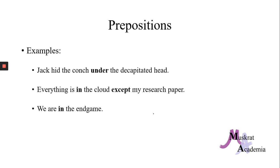Examples of prepositions: Jack hit the conch under the decapitated head. Under is a preposition. A lot of times, when you're working with prepositional phrases, you'll put parentheses around it, identify the preposition, and then identify the noun of the preposition. The noun of the preposition is generally the first noun that comes after the preposition. Where's the conch? Under the head. Decapitated is just an adjective describing head. Everything is in the cloud except my research paper. In this case, our prepositions are in and except — cloud is the noun of the preposition for in, and paper is the noun of the preposition for except.